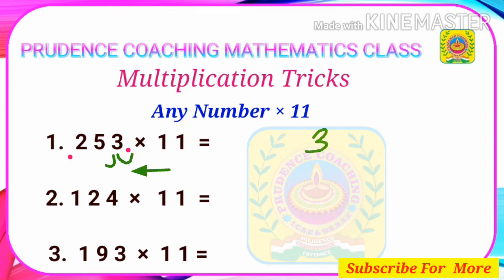0 plus 3, 3. 3 plus 5, 8. 5 plus 2, 7. 2 plus 0 will be 2. So our final answer is 2, 7, 8, 3.